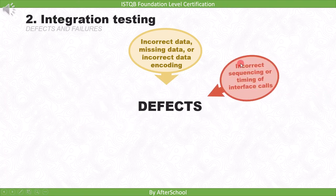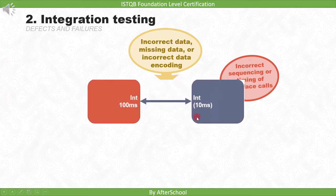The next integration testing defect is incorrect sequence or timing of interface calls. For example, one module is sending data every 100 milliseconds, whereas the other is accepting data every 10 milliseconds. Since the timing is different, data will be lost, and we can find such errors during integration testing.